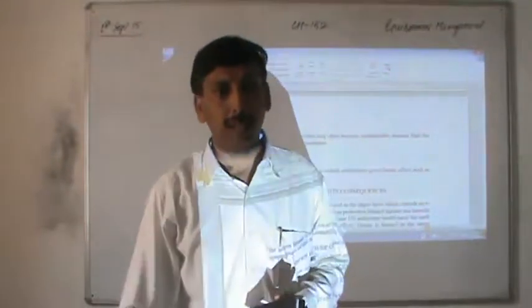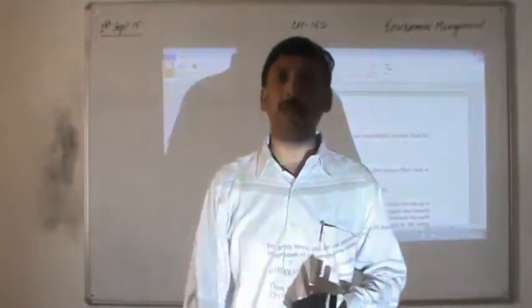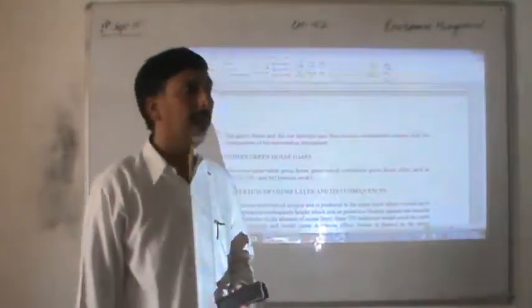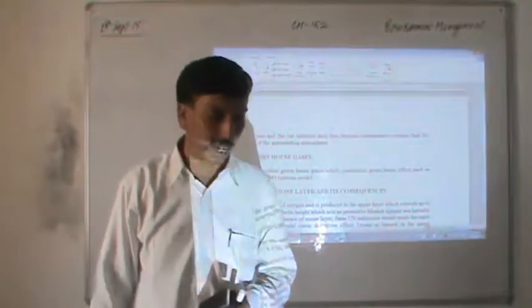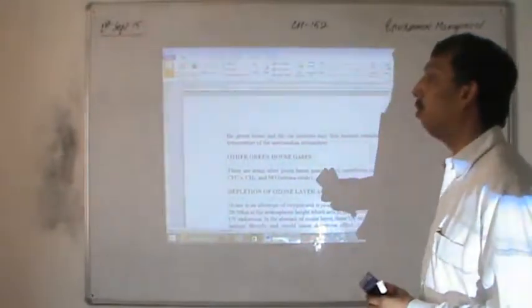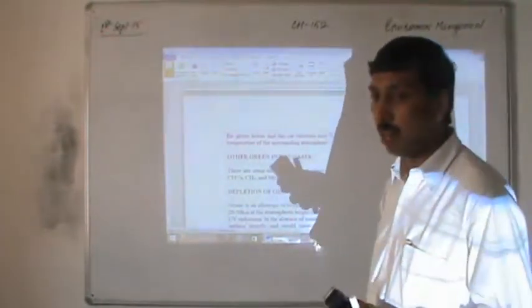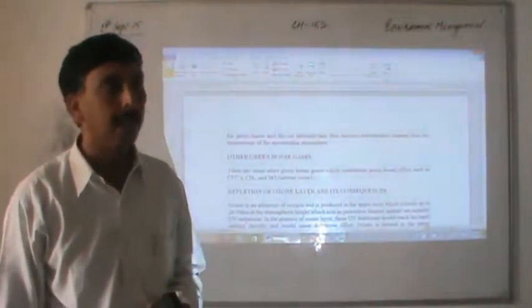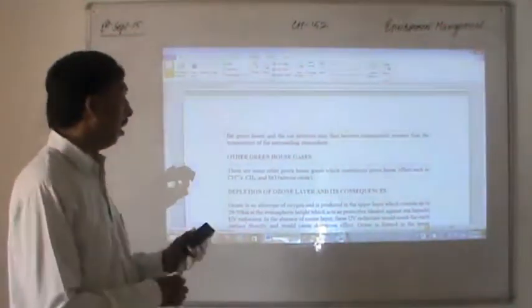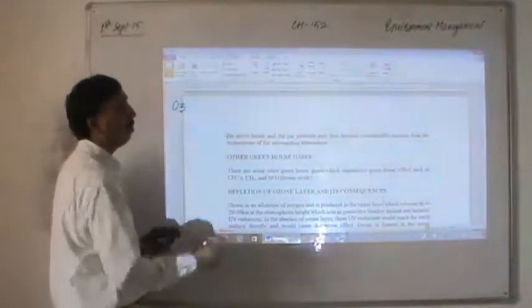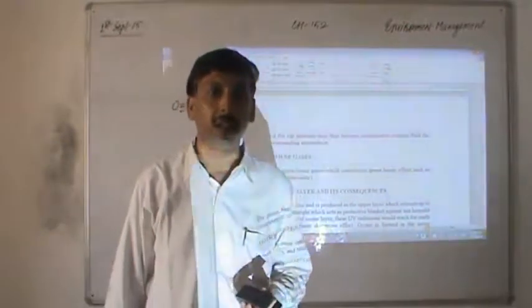Good morning everybody. In the last lecture we discussed about ozone, and I told you that in the next lecture we will continue about this topic. As already mentioned in the introduction, ozone is very important for the existence of life on this earth because without ozone, harmful ultraviolet light would reach the earth's surface and cause major effects. Chemically, ozone has the formula O3 and it is produced from oxygen itself in the presence of ultraviolet light.